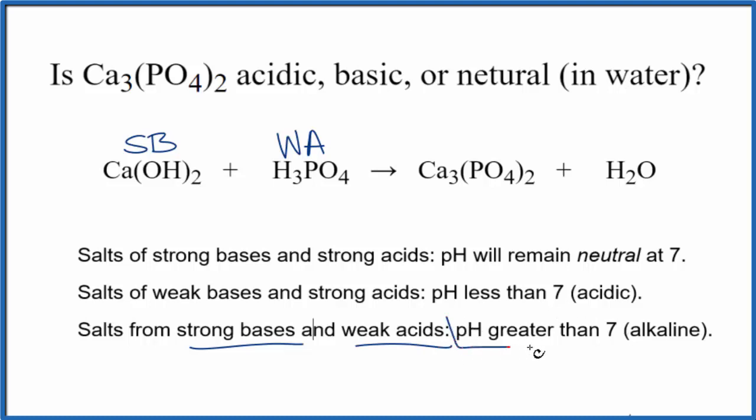And according to the rules, the pH is going to be greater than seven. It's going to be alkaline. We also call that basic. So Ca₃(PO₄)₂ calcium phosphate will form a basic solution when it's dissolved in water. This is Dr. B. Thanks for watching.